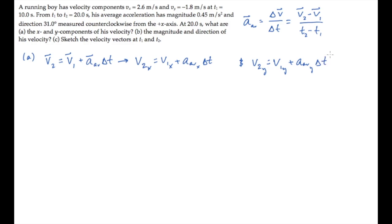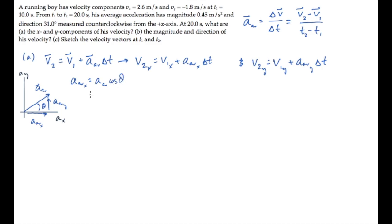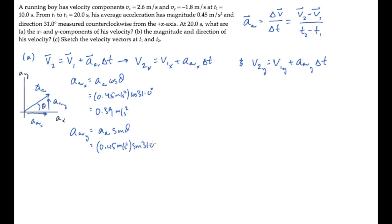The average acceleration has a magnitude of 0.45 meters per second squared and an angle theta of 31 degrees. The x component and y component of this vector are shown here. When you calculate them, you find for the x component a value of 0.39 meters per second squared, and for the y component a value of 0.23 meters per second squared. These we can substitute into the equations above.